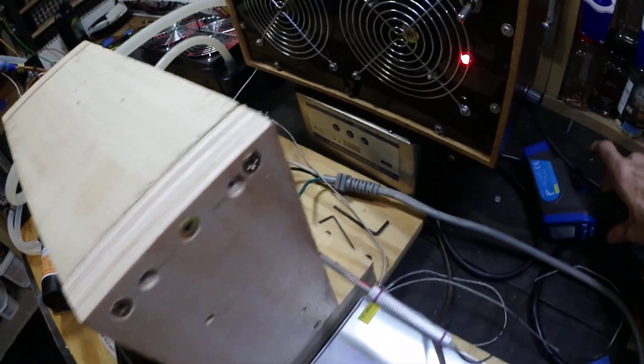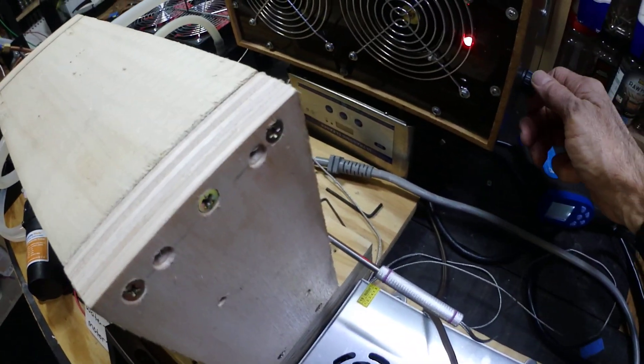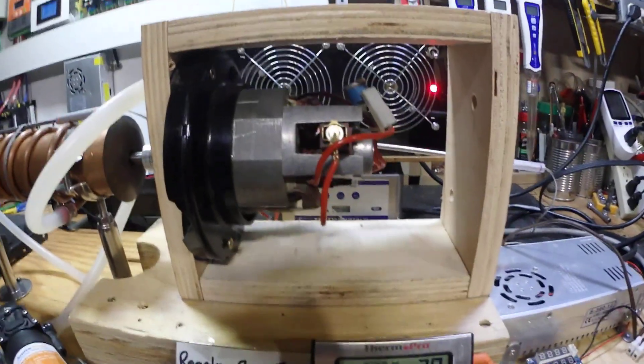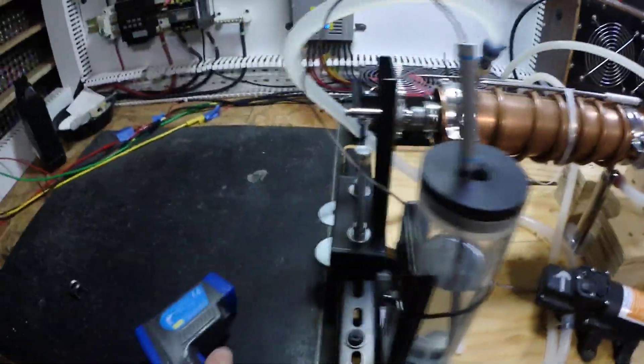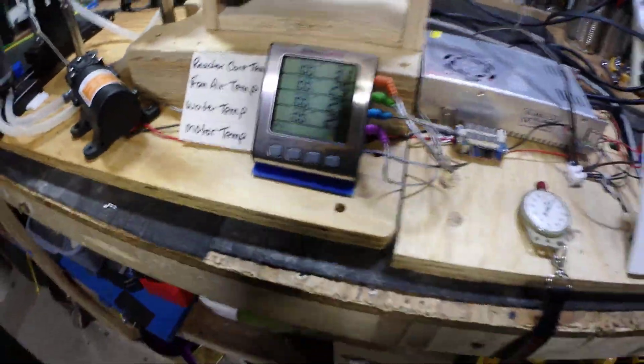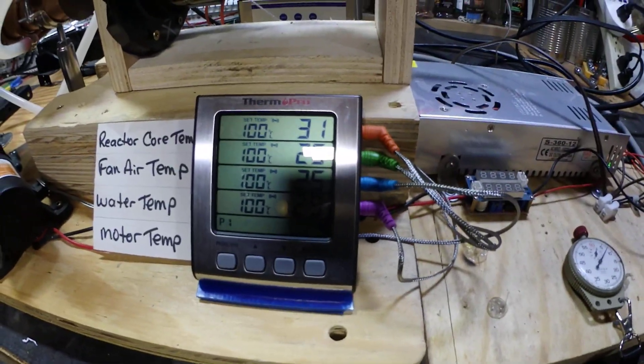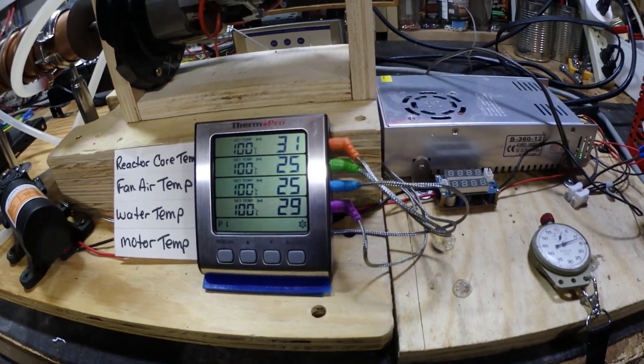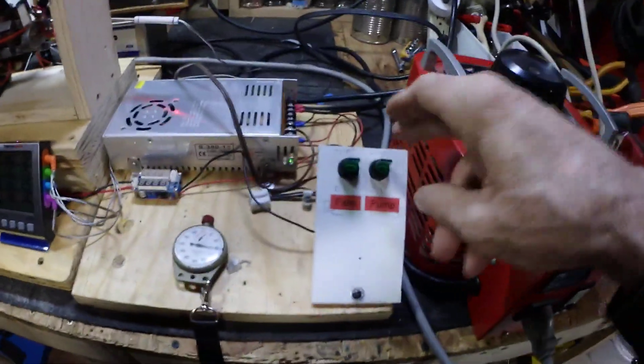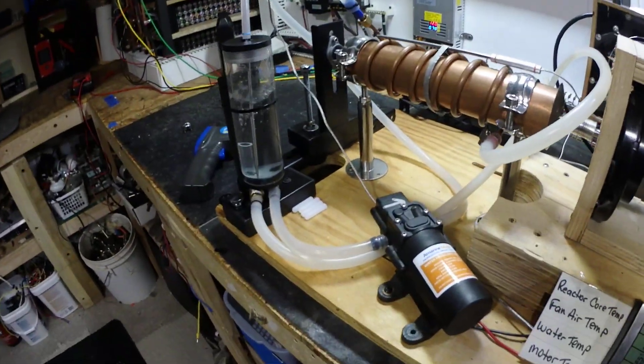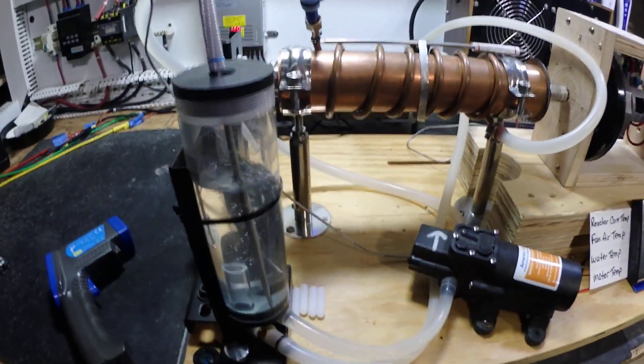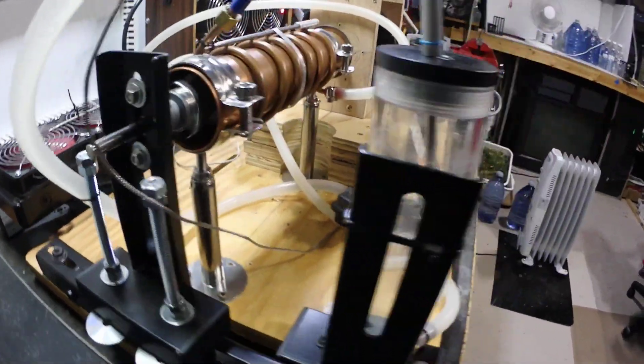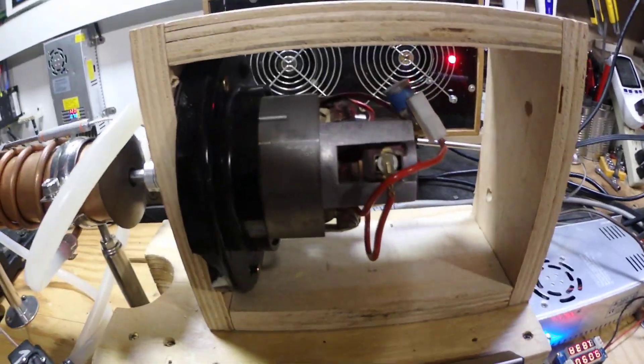I might as well turn this on to keep nice air flowing in case it starts smoking, which I think it will. So the reactor is up to 31°C, motor 29. I'm going to start the pump and the fans to keep it nice and cool. I don't want those magnets to heat up at all, I'm going to use them in another project. Yeah, I can smell something burning already.